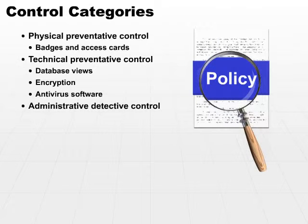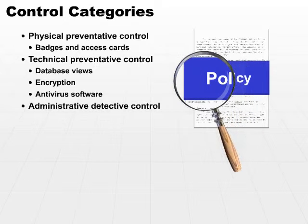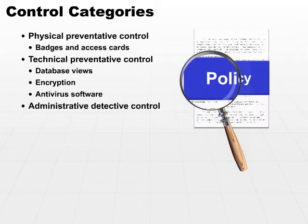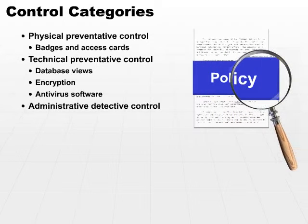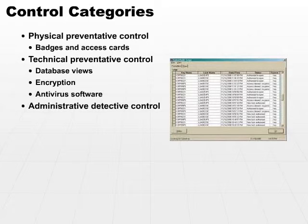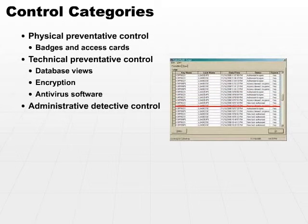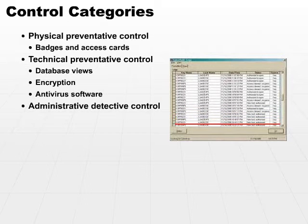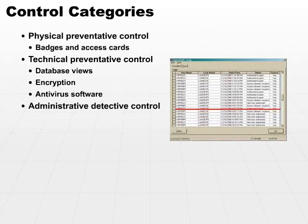An administrative detective control could be auditing and performance reviews after the fact. I want to detect when something has occurred, so I'm going to go back to my auditing information, my logs perhaps, and look through to see what people have been doing. Performance reviews are very similar — go back and look at the actions that different subjects have taken and see if we find something that's not in line with our security policy. That would be an administrative detective control.